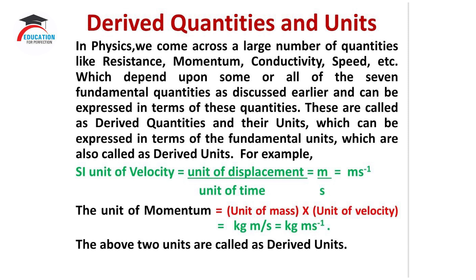like resistance, momentum, conductivity, speed, etc., which depend upon some or all of the seven fundamental quantities as discussed earlier and can be expressed in terms of these quantities. These are called derived quantities, and their units, which can be expressed in terms of fundamental units, are called derived units.